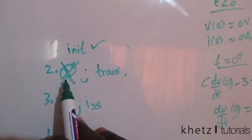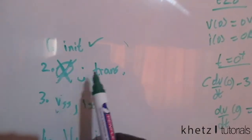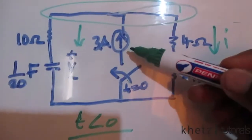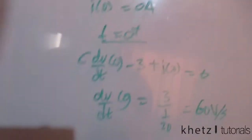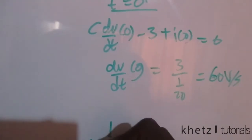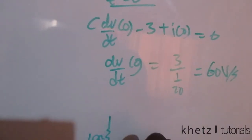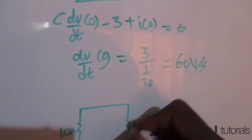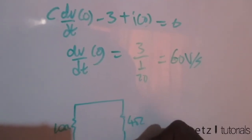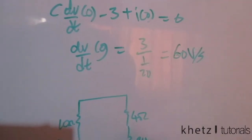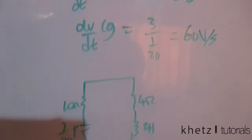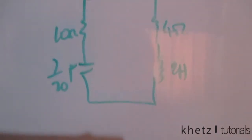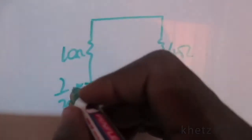We now turn off the independent source and find the type of transient response. Looking at the resulting circuit, it is a series RLC, so we will use the series RLC formulas to find the damping factor.